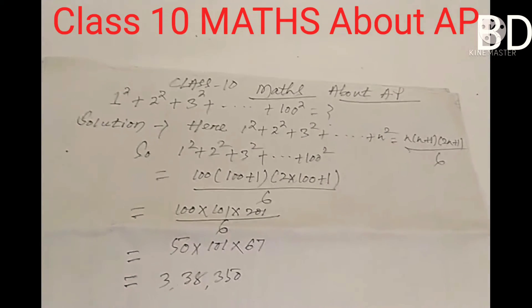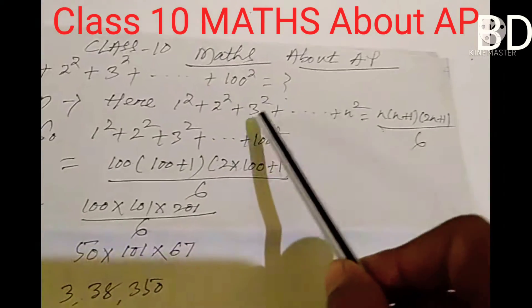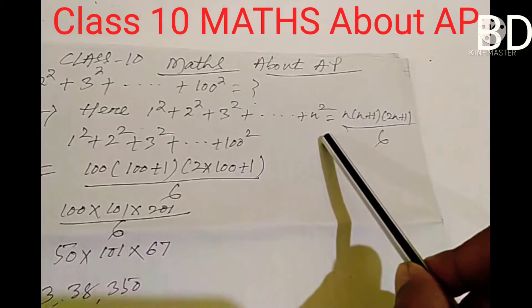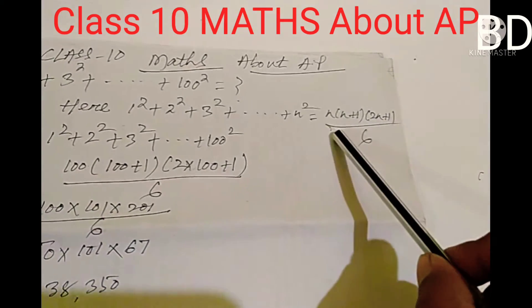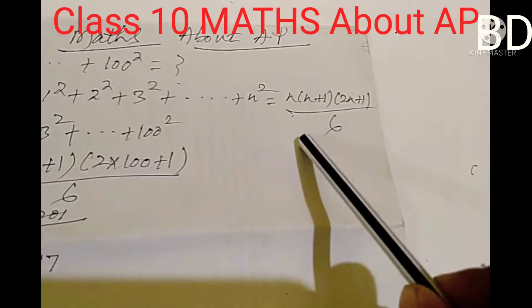The formula is: 1 squared plus 2 squared plus 3 squared plus dot dot dot plus n squared equals n multiplied by (n plus 1) multiplied by (2n plus 1) divided by 6.